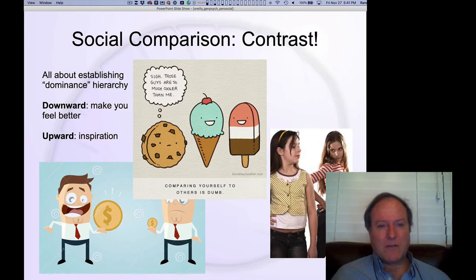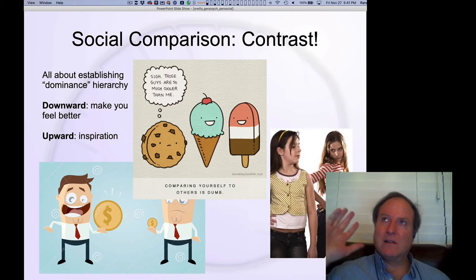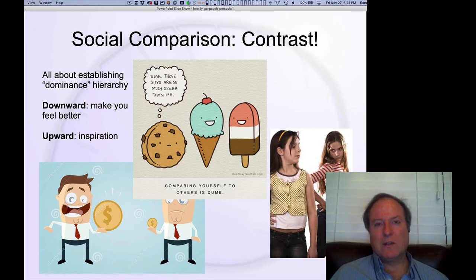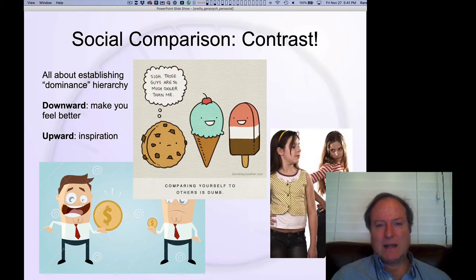The other direction is upward social comparison, where you look to somebody who you see as clearly a very high-ranking person on a given dimension. That might be a source of inspiration, a role model — these kinds of ideas. These are pretty intuitive, basic dynamics that take place in the context of social comparison and figuring out how you fit in the overall social order.